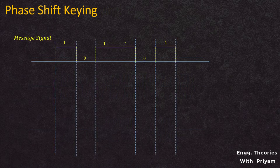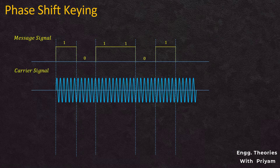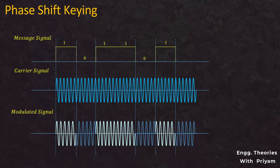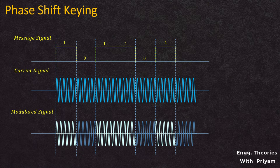In Phase Shift Keying (PSK), the message signal is a sequence of data bits represented as a digital signal, and the phase of the high-frequency carrier signal is varied according to the message signal. Modulation is performed in the transmitter block; in the receiver block, the modulated signal is demodulated to retrieve the original information signal. Demodulation is exactly the opposite of the modulation process.